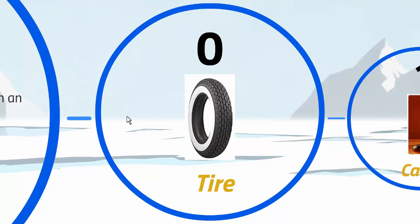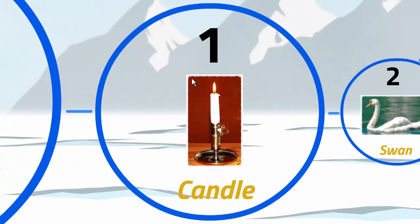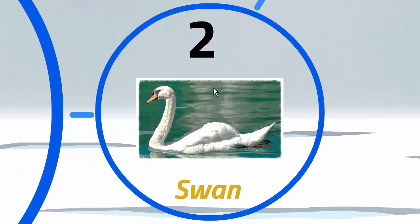0 looks like a tire. So the digit 0 is associated with the image of tire in your head. 1 looks like candle, so the digit 1 is associated with candle. 2 looks like swan — the neck of a swan.